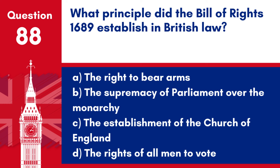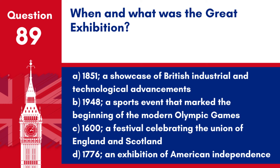Answer: b. The supremacy of Parliament over the monarchy. The Bill of Rights 1689 laid the foundation for a constitutional monarchy in the UK, limiting the powers of the monarch and establishing parliamentary sovereignty.